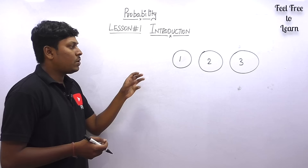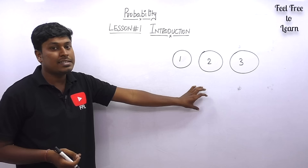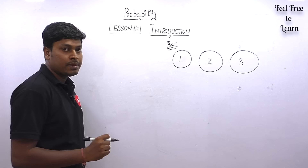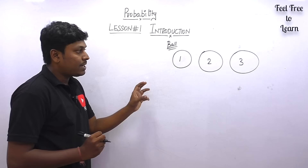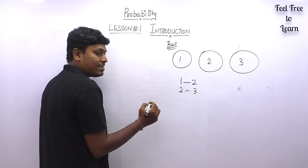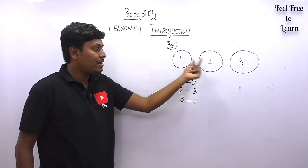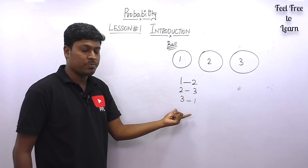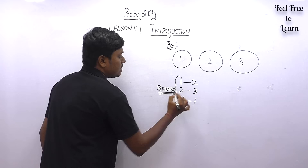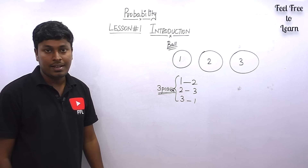Let me explain a small concept on probability applied in lessons five, six, and seven. Assume we have three balls — ball one, ball two, and ball three. Our target is to pick two balls. How many ways can we pick two balls from three? We can pick ball one and two, or ball two and three, or ball three and ball one — so totally three possible combinations.